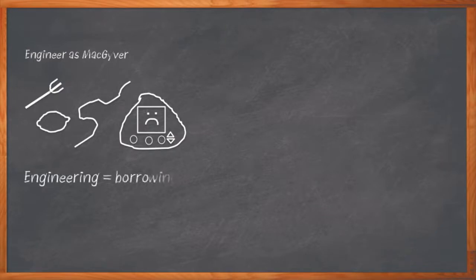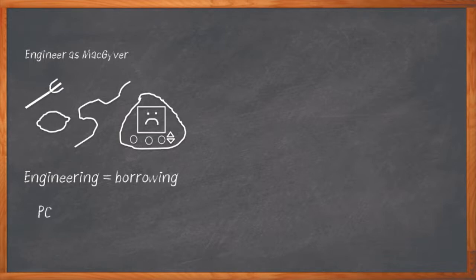We always want to grab this interface or that component that was originally designed for something else. And for the past few decades, our main source of stuff to borrow has been the PC — DDR interfaces, PCI, USB, Ethernet, or even that repurposed old power supply.